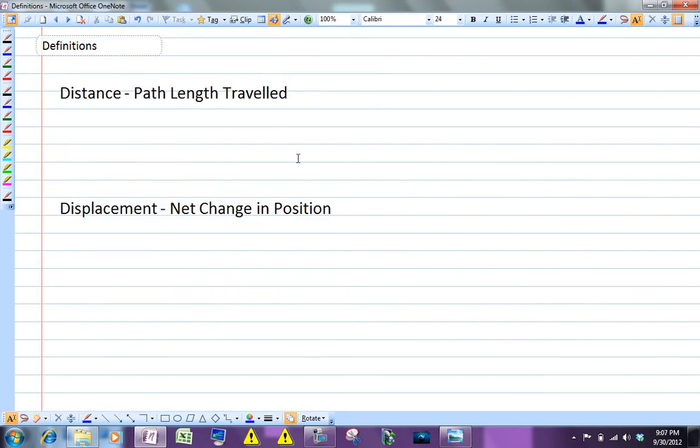First of all, distance is the actual path length traveled. When you think of how far you went, you're thinking of distance. So this is sort of like the odometer in your car. It's a measure of how far you've really gone.